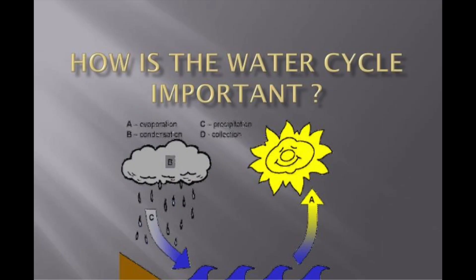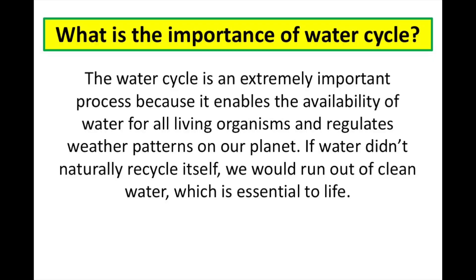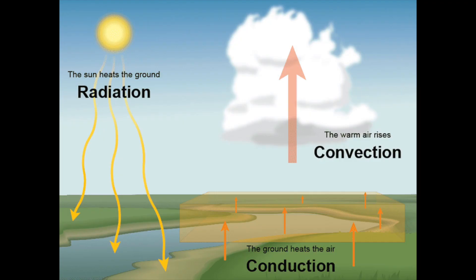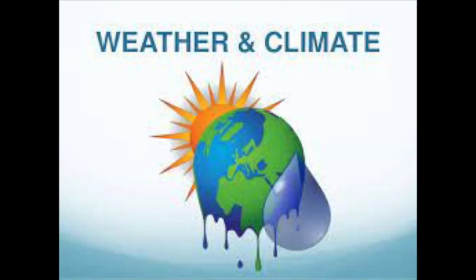The water cycle involves the exchange of energy, which leads to temperature changes. When water evaporates, it takes up energy from its surroundings and cools the environment. When it condenses, it releases energy and warms the environment. This heat exchange influences climate.